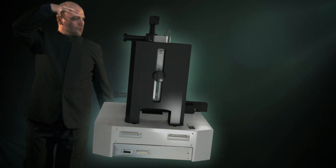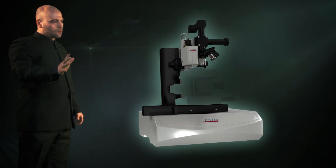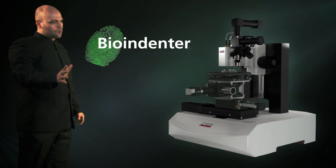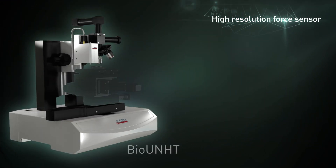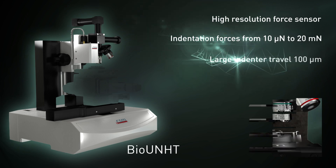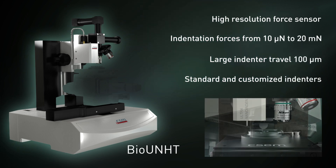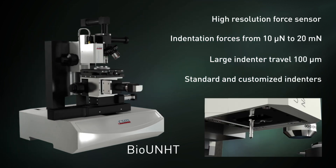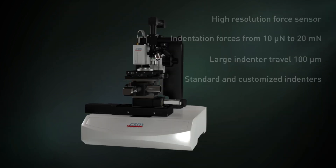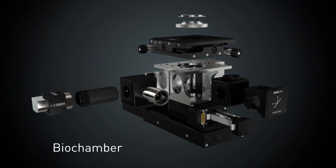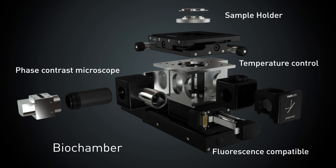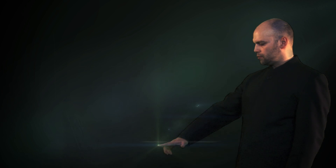Bio-indenter has two main parts. CSM Instruments Bio-UNHT applies forces from 10 µN to 20 mN and has a large vertical displacement. CSM's bio-chamber maintains the sample in a controlled environment and is equipped with a phase contrast microscope.